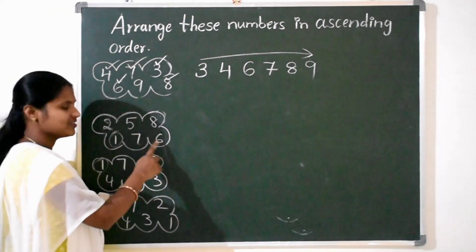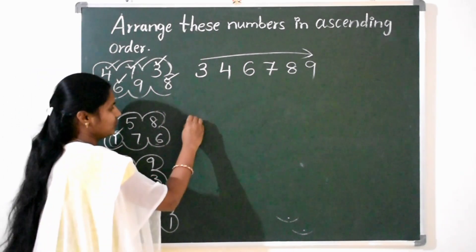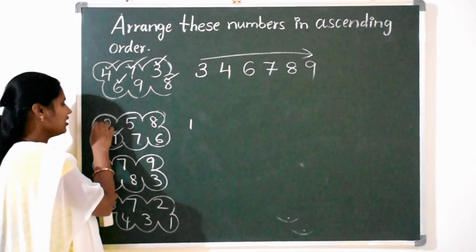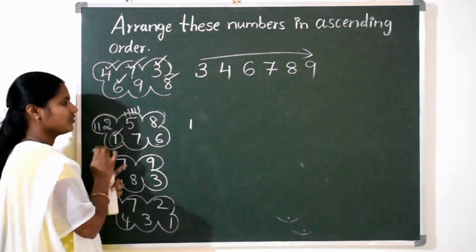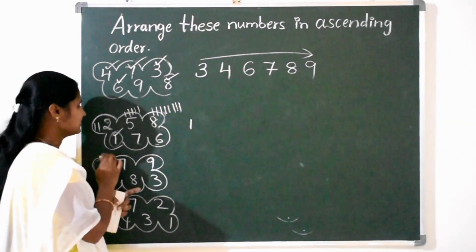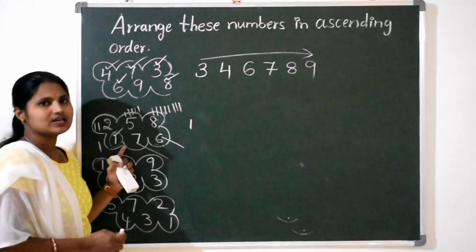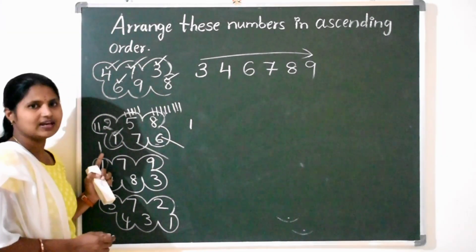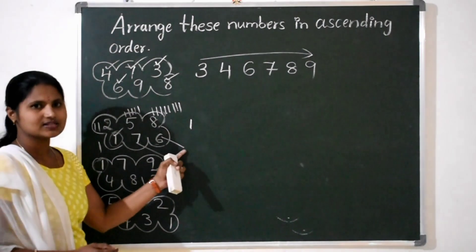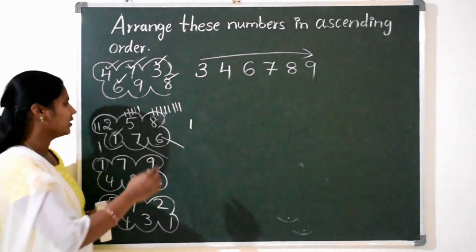One more example: 2, 5, 8, 1, 7, 6. Very good — 1 is the smallest number. If you are confused about which is the smallest, just draw lines below the number. Here 5 lines, here 8 lines, 1 line for 1, 7 lines for 7, 6 lines for 6. Which is the smallest? 1, because 1 has the fewest lines. So write 1 first. Arrange the numbers from small to big.